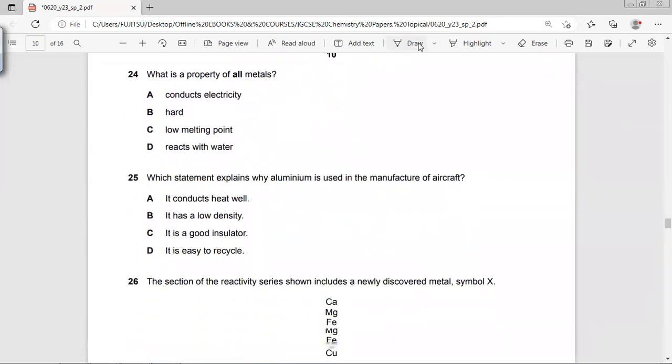What is a property of all metals? All metals can conduct electricity. We know that some metals are soft, for example Group 1 metals. Group 1 metals have low melting point. React with water? Not all. Silver and gold are some examples.